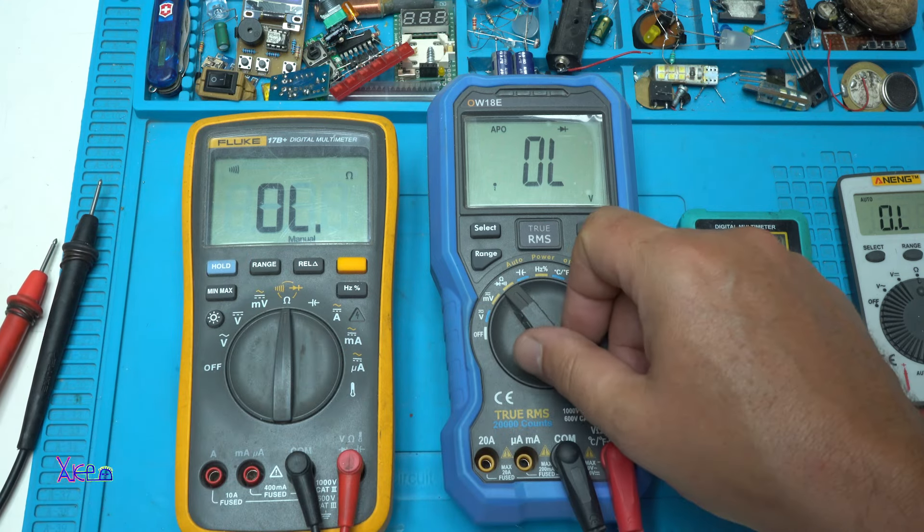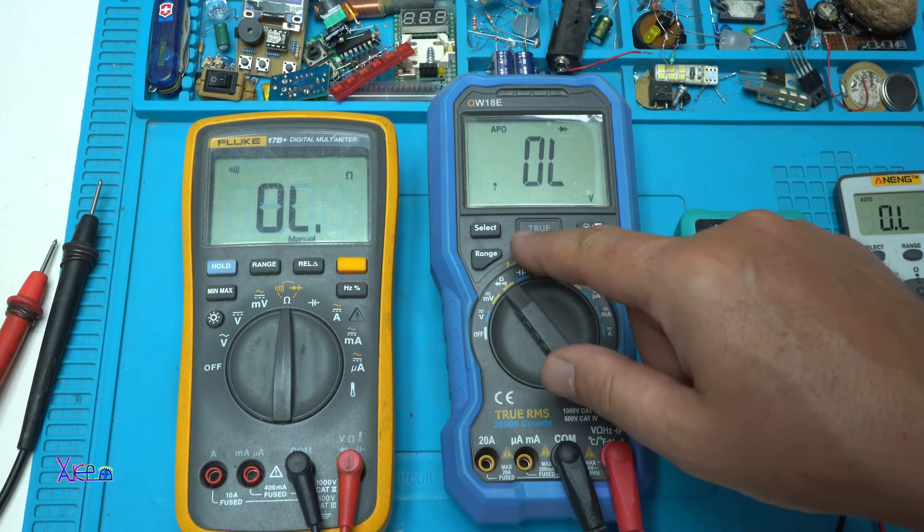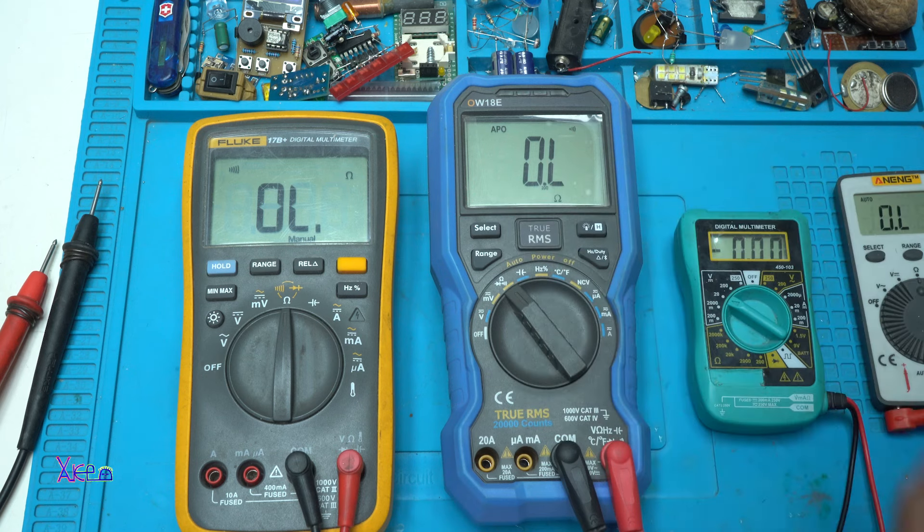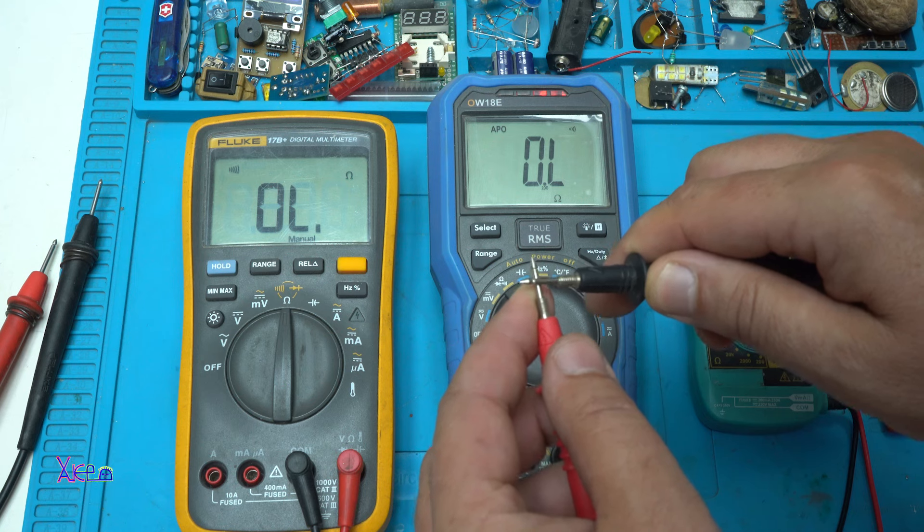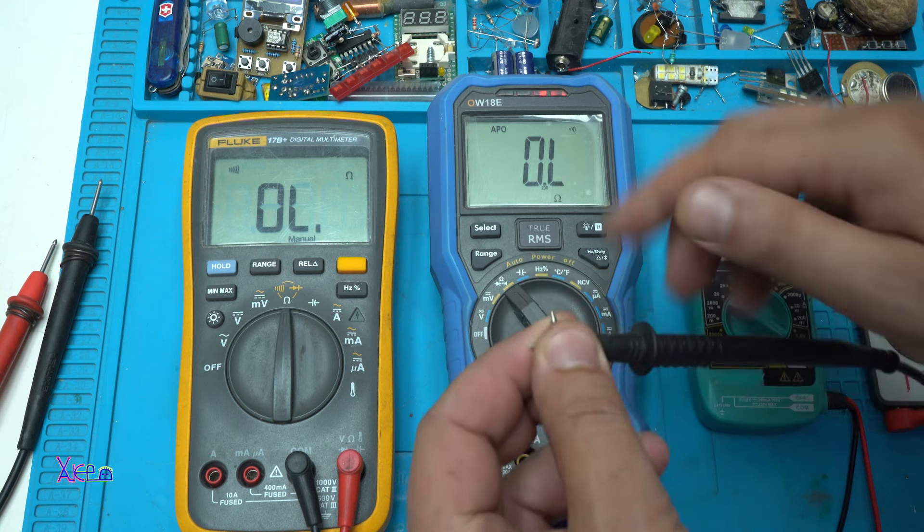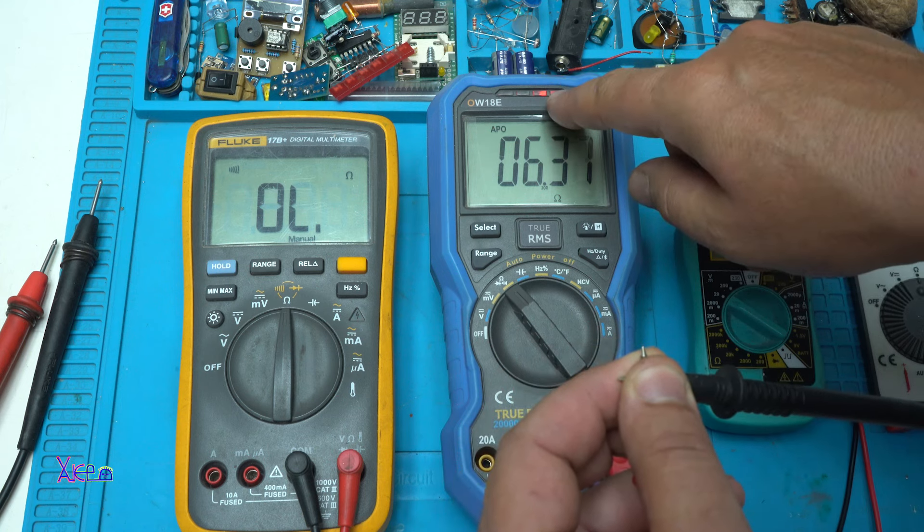It's the same for this one. Manually select the beeping signal for continuity. This one, beside the beeping signal, it has the light right here.